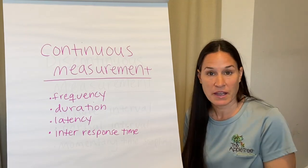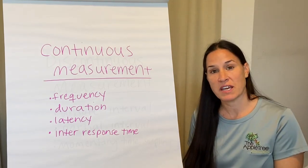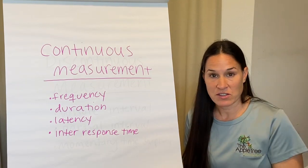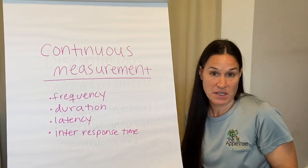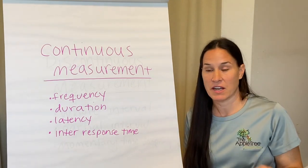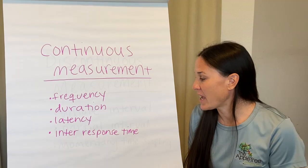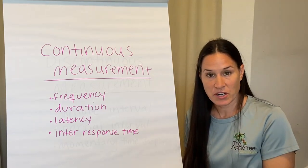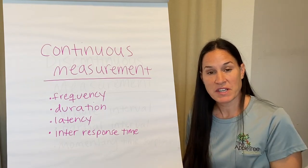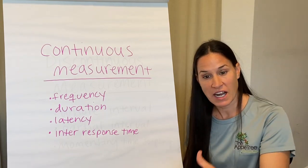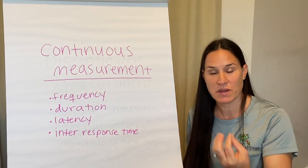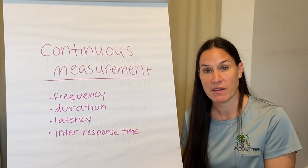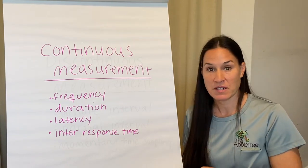Every single time you are collecting latency data on that particular behavior, that is continuous measurement. Inter-response time (IRT) is the time between responses. Let's say your client engages in high-frequency hitting and you're told to take IRT data — you start the timer once a hit occurs, then stop it once the next behavior occurs. You are doing this every instance of that observed behavior, as defined by your programming and behavior team. That's continuous measurement.